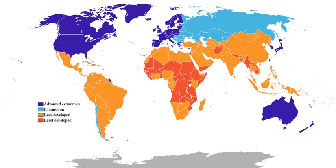Terms linked to the concept of developed country include: advanced country, industrialized country, more developed country, MDC, more economically developed country, MEDC, global north country, first world country, and post-industrial country.